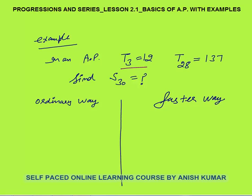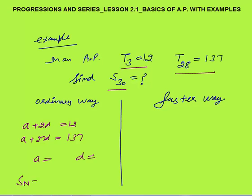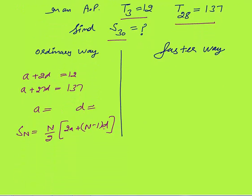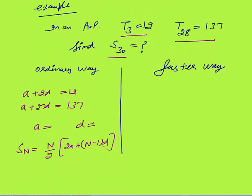In an AP, the third term is 12 and the 28th term is 137. You need to find the sum of first 30 terms. The ordinary way is: term 3 gives a plus 2d equals 12, and term 28 gives a plus 27d equals 137. You then calculate a and d, and apply the formula Sn equals n by 2 times 2a plus n minus 1 into d. This takes about one to two minutes to solve.